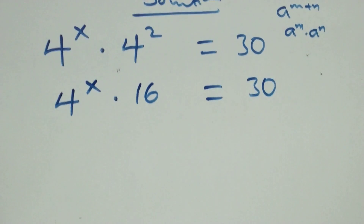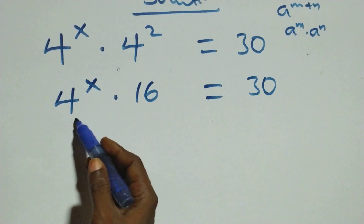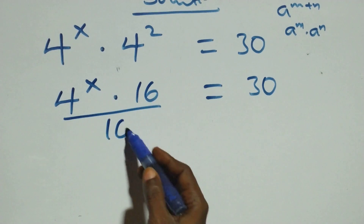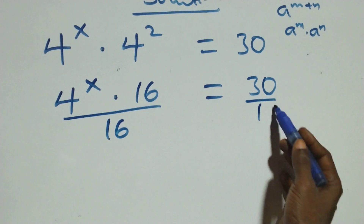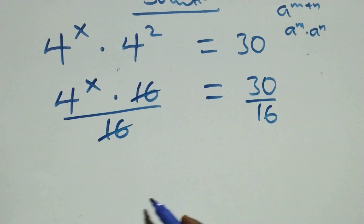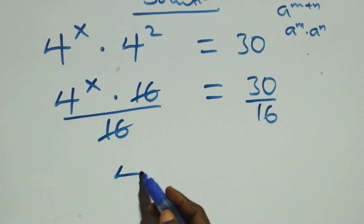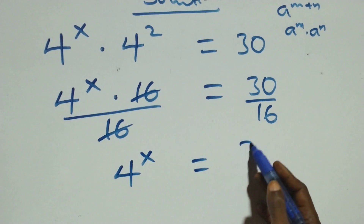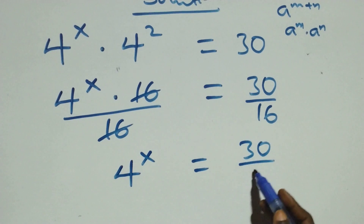The next step: we divide both sides by sixteen. The sixteen on the left cancels out. We are left with four raised to power x, which equals thirty over sixteen.